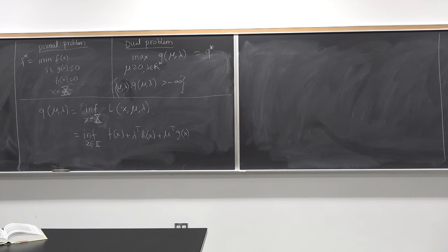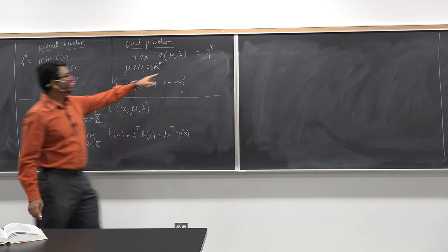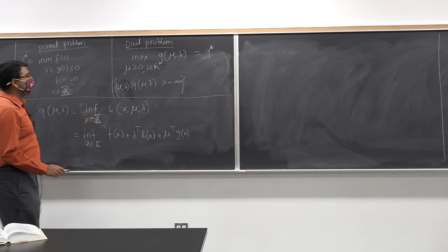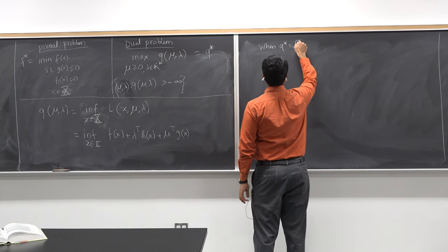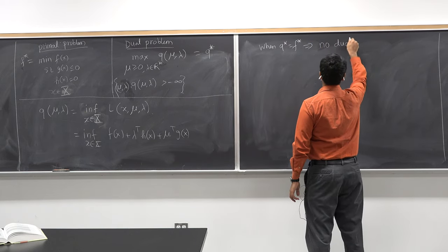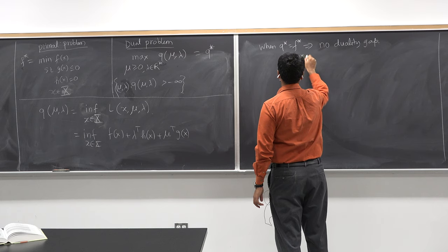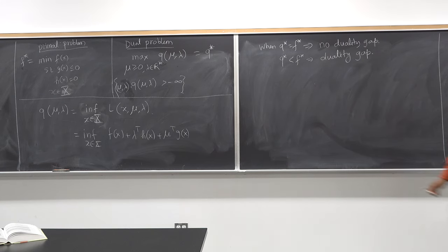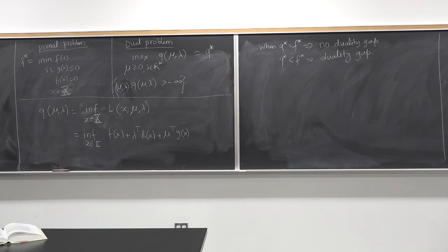So what does the weak duality theorem say? Weak duality theorem says that q star is always less than or equal to f star — this value is always lower than or equal to this value. Now, when q star is equal to f star, we say that there is no duality gap. And when q star is strictly less than f star, then we say that there is a duality gap.